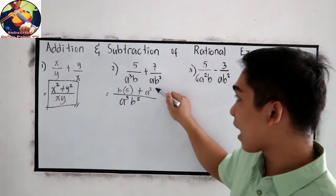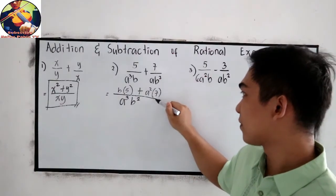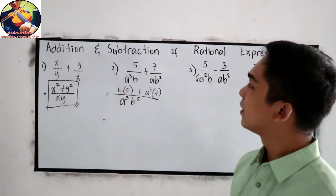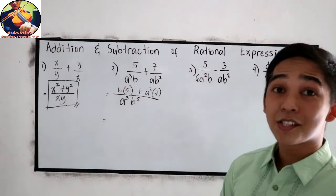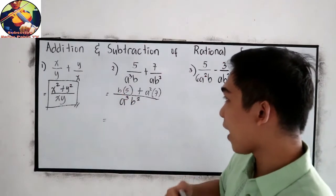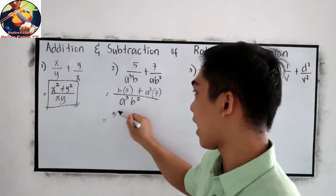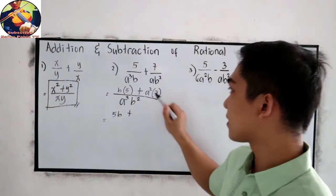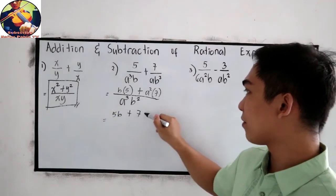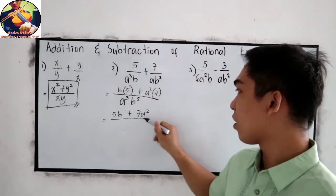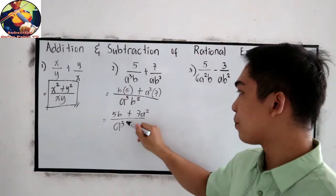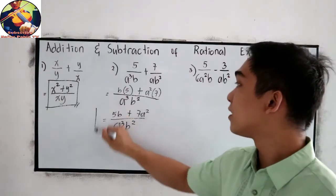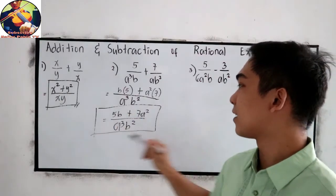And now, just copy 7. Now, simplify, b times 5, that is 5b, plus a squared times 7, 7a squared, all over a cubed b squared. This will be our final answer.